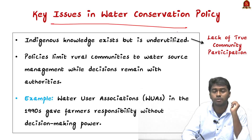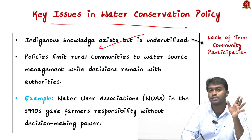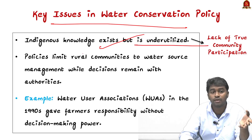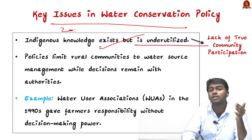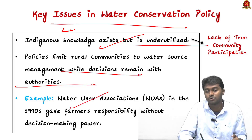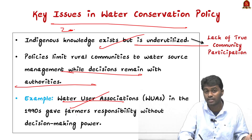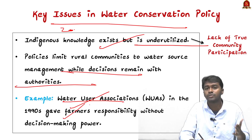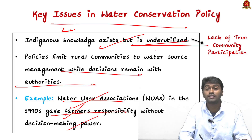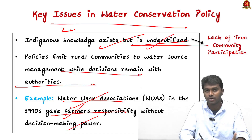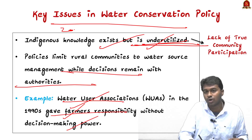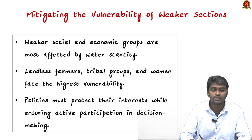A key issue in India's water conservation policy is the underutilization of indigenous knowledge. The 2002 National Water Policy amendment included community participation, but decision-making still lies with state authorities. For example, Water User Associations — statutory bodies established in various states since the 1990s, comprising farming and water-dependent communities — have no real authority in decision-making, resulting in underutilization of indigenous knowledge and a lack of true community participation.